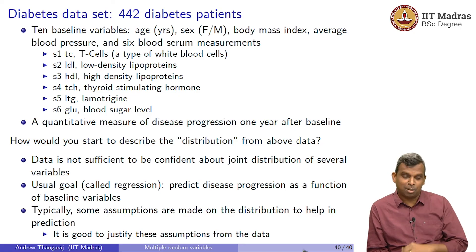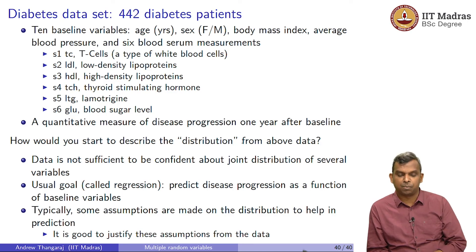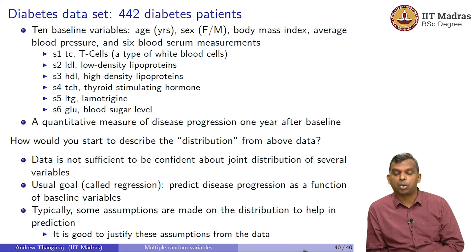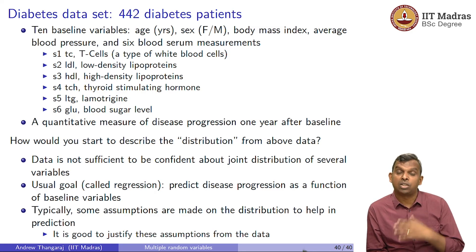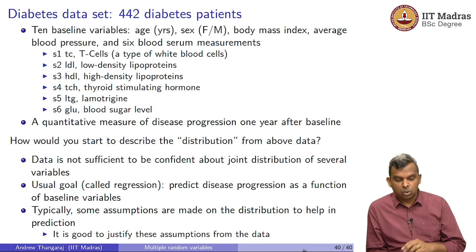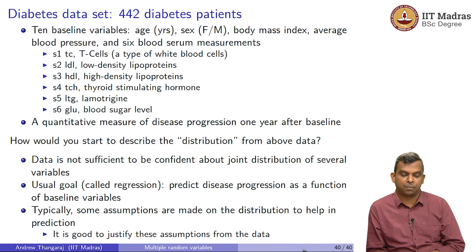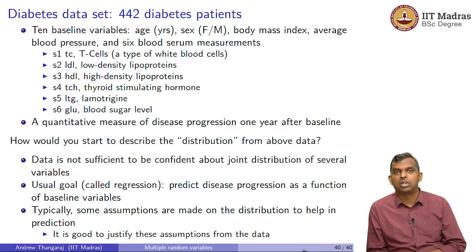The usual goal is not to find the full distribution, but only to find something like what is the disease progression one year after measuring all these things. These patients were already diabetic at the start. Can we come up with any sort of prediction of their situation after one year? You make some assumptions on the distribution to whatever extent possible, figure out what you can say about the distribution, and then as long as you can justify those assumptions from the data, you can go ahead and do some computations.